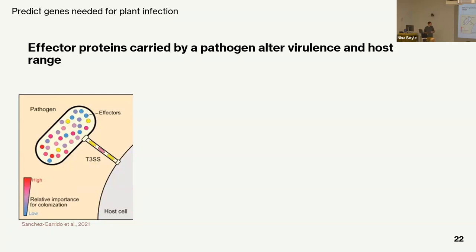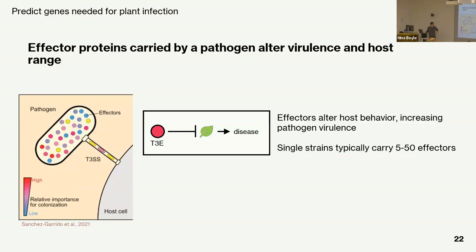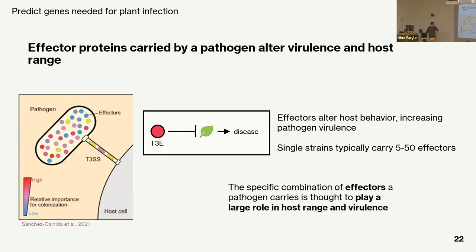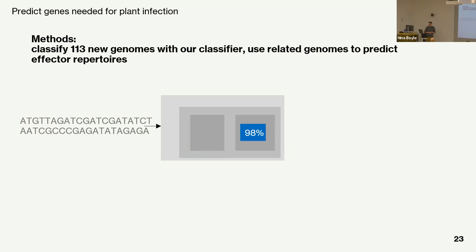I use effector proteins as my virulence factors. Effector proteins are directly injected through the type 3 secretion system into the host — they manipulate the host to release nutrients or water, making it easier for the pathogen to grow and cause disease. The specific combination of effectors a pathogen carries plays a very important role for host range, because plants can actually recognize effectors and shut down the disease. Pathogens carry 5 to 50 effector proteins, which acts as a barrier in some places.